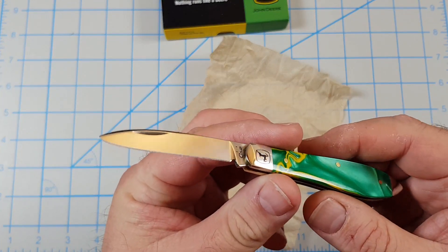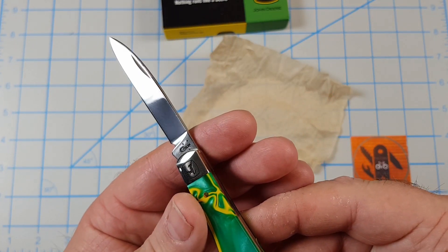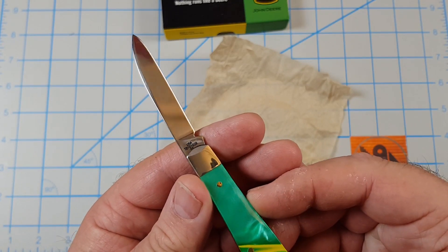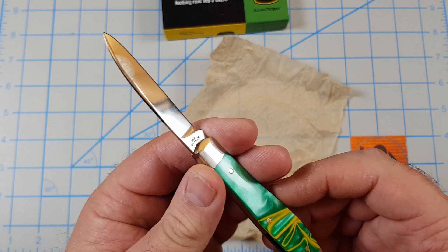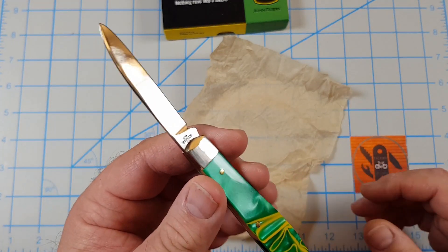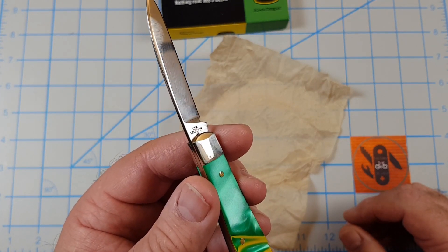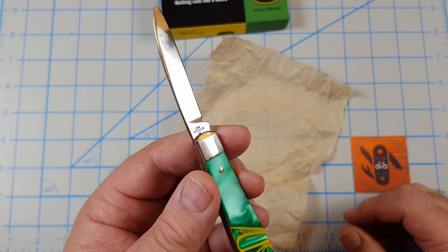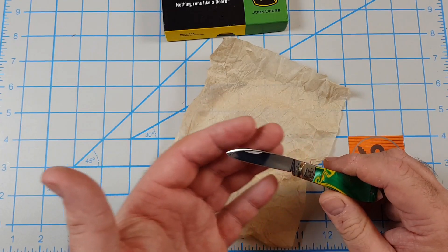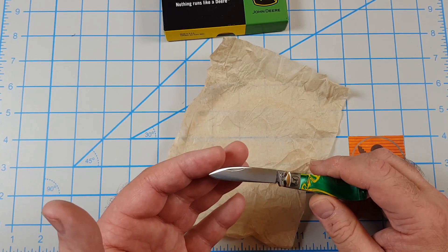Open it up - it has a half stop, clicks into place. Says Case, says XX, Case on one side. The other side says USA. These are made in Bradford, PA, which is not that far away from us, maybe two hours. There's a bunch of numbers, then it says SS.